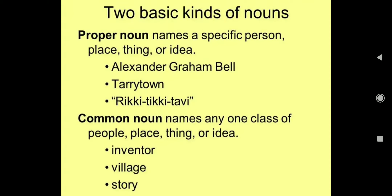Now, types of noun. The first one is proper noun. Proper noun indicates a specific person, place, thing or idea. Ya, kisi bhi particular person ka naam, place ka naam, thing ka naam, idea ka naam — jo specifically diya jaa raha ho — woh humara proper noun kahlaayega. For example, Alexander Graham Bell — kisi ek specific vyakti ka naam hai, that's why proper noun hai. Tarrytown — ek specific jagah ka naam hai, again a proper noun. Rikki Tikki Tavi — ek specific poem ka naam hai, again a proper noun.